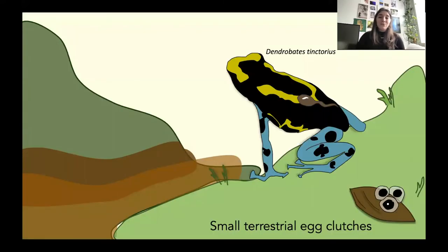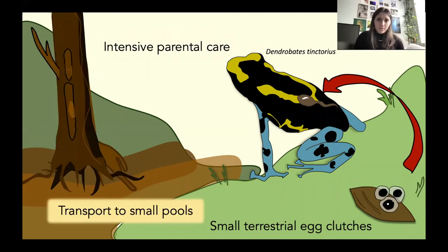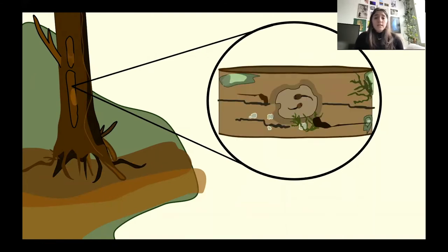So I'd like to introduce you to Dendrobates tinctorius. These guys will lay their eggs terrestrially, and then from these terrestrial egg clutches, dads will actually transport recently hatched tadpoles to small pools of water. This intensive parental care is pretty rare in frogs, so it's really interesting to know where dads are depositing their children. But of course, these small pools aren't paradise.